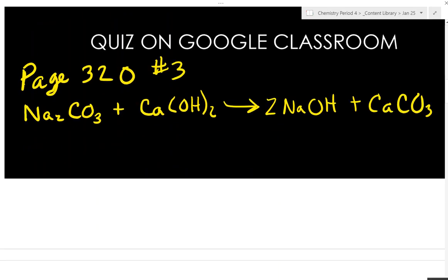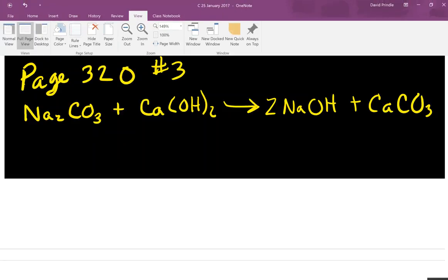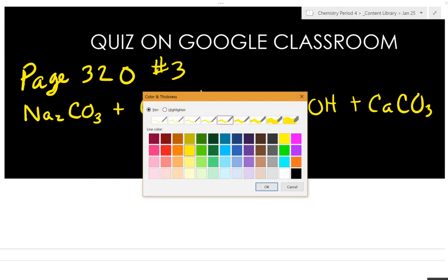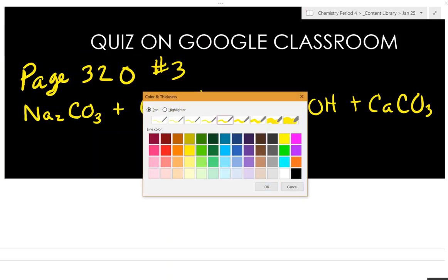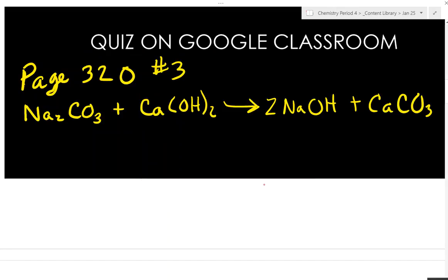We're only going to do this for one. You can do the rest on your own. Let's go with red. We're going to take the first one, sodium carbonate. We got sodiums, we got carbons, and we got oxygens. You're going to need your periodic table. How many sodiums do we have? Two.